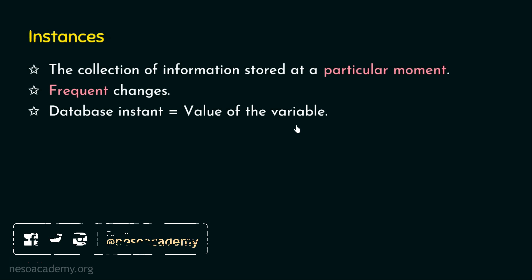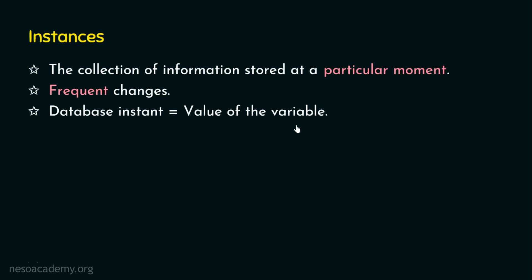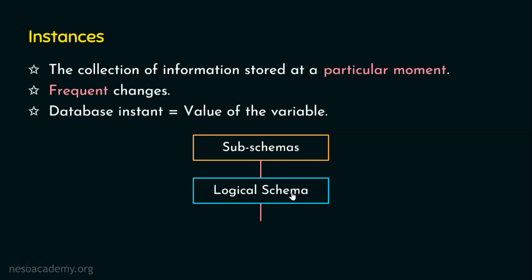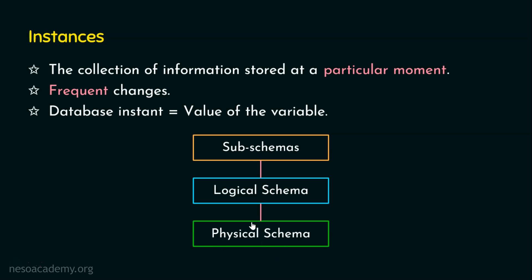When we talk about schema and instances, we should know that there exist sub-schemas at the view level, where there exist multiple views. We have the logical schema at the logical level, and one more schema at the bottom-most level — the physical schema, where the database actually resides and data is stored in the physical medium. How data is stored is described in the physical schema; how it is organized in the application is done in the logical schema; and how it is presented to the user through views is dealt with in the sub-schema. I hope now you can understand what schemas and instances are. I'll see you in the next presentation — thank you for watching.